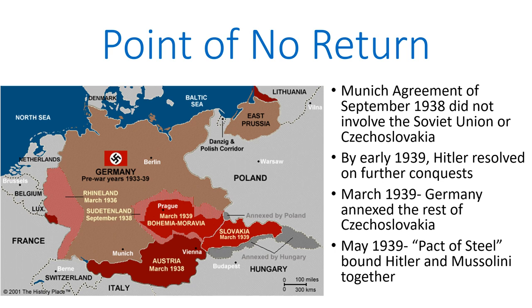In March of 1939, he annexed the rest of Czechoslovakia. In May, Hitler and Mussolini formed the so-called Pact of Steel, where they agreed that they would go to war together against the Allies and that they would not make separate peace. The Pact of Steel is really the point of no return. At that point, both major fascist leaders in Europe resolved upon making war and were determined at all costs to defeat the Allies. Meanwhile, Japan had already invaded Manchuria in 1931, and its conflict with China and with the other powers of the Pacific would soon be rolled into the larger World War II once the war broke out in Europe.